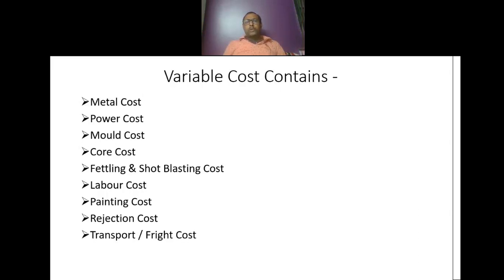Variable cost contains metal cost, power cost, mold cost, core cost, fettling and shot-blasting cost, labor cost, painting cost, rejection cost, and transport freight cost.